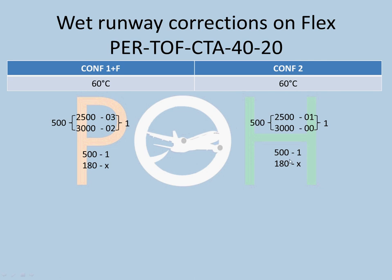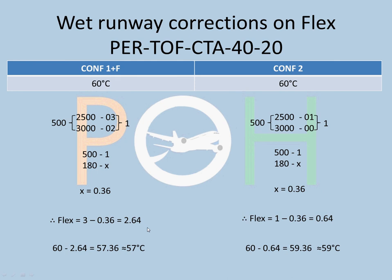Since temperature decrement increases as runway length decreases, we subtract the interpolated value. For Config 1+F: 3 − 0.36 = 2.64°; for Config 2: 1 − 0.36 = 0.64°. Applying to the corrected flex temperatures of 60: Config 1+F gives 60 − 2.64 = 57.36, rounded down to 57. Config 2 gives 60 − 0.64 = 59.36, rounded down to 59.